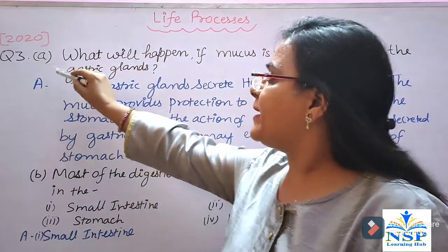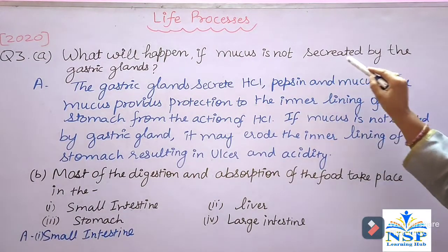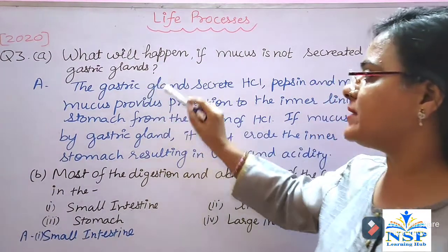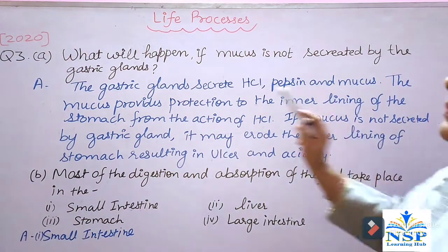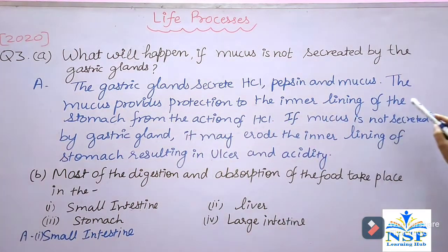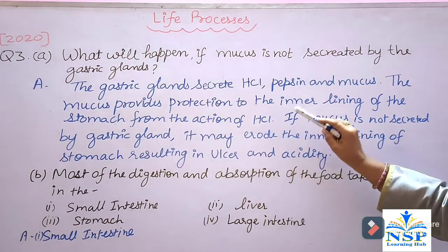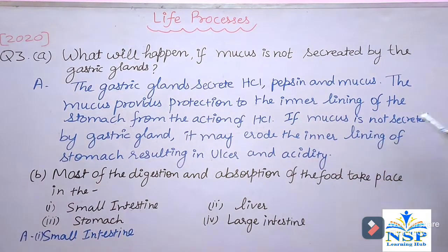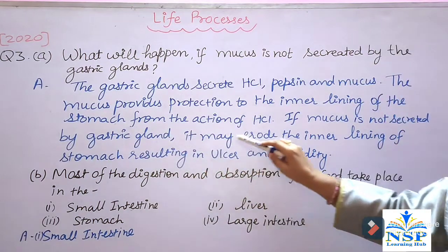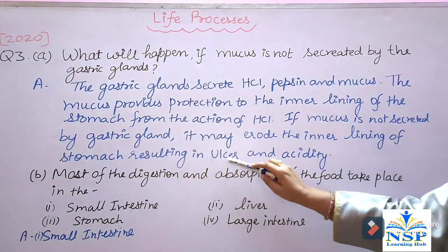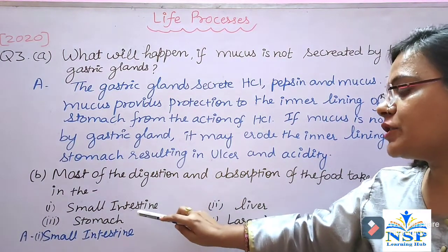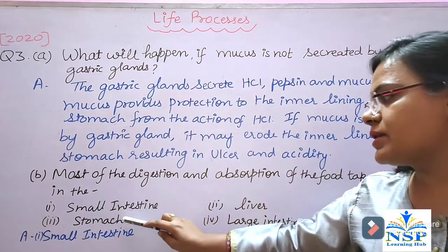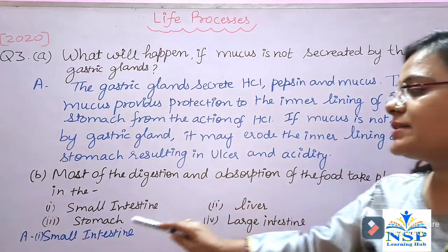Question number 3: What will happen if mucus is not secreted by the gastric glands? The gastric glands secrete hydrochloric acid, pepsin, and mucus. The mucus provides protection to the inner lining of the stomach from the action of hydrochloric acid. If mucus is not secreted by the gastric glands, it may erode the inner lining of the stomach, resulting in ulcer or acidity. Most of the digestion and absorption of food takes place in the small intestine.